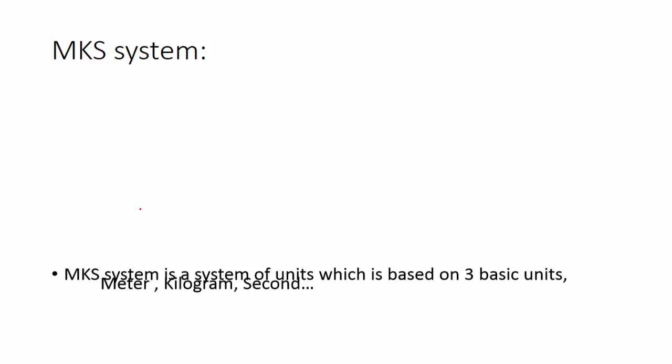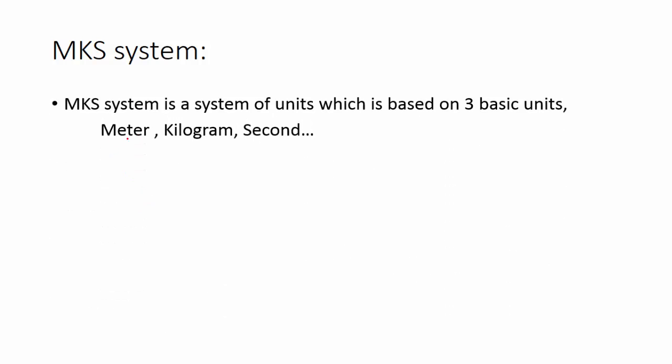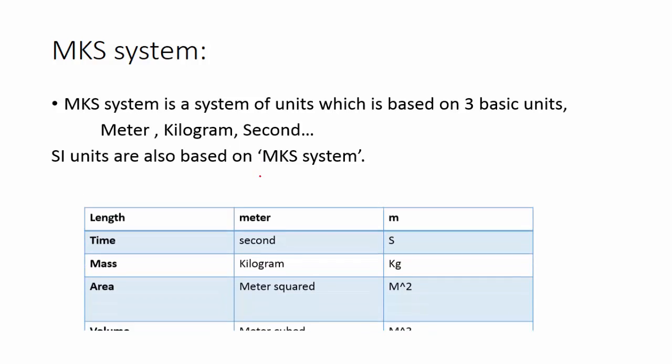MKS system. What is MKS system? Here m is for meter and k is for kilogram and s is for second. So this system is actually based on three basic units: meter, kilogram and second. SI units are also based on these three units and also on MKS system.